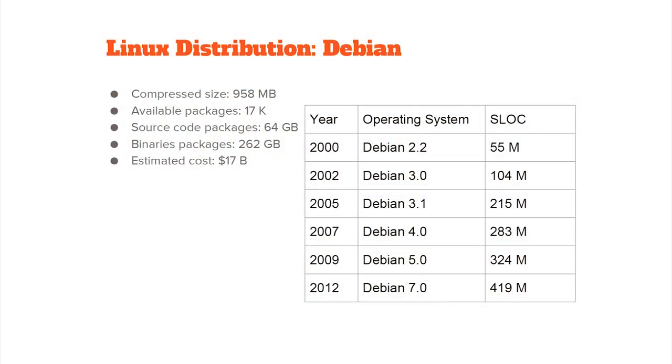These are huge, established pieces of code that make everything work — we use them all the time whether we think about it or not. If we use Google Docs, we're using Linux on a machine running in a Google data center. For Debian 7, which is close to their latest release, that's 419 million lines of code.